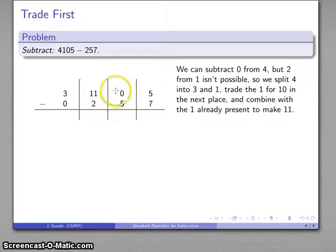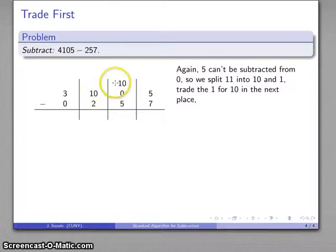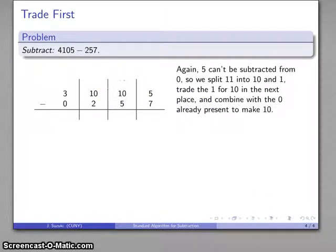But, as I look ahead and I know I'm going to have to do 5 from 0. So, again, I can't subtract the 5 from the 0. So I need to split a 1 off of here. So I'm going to split that 11 into a 1 and a 10. Trade that 1. No borrowing here. You never get it back. And consolidate. And 5 from 10, not a problem.